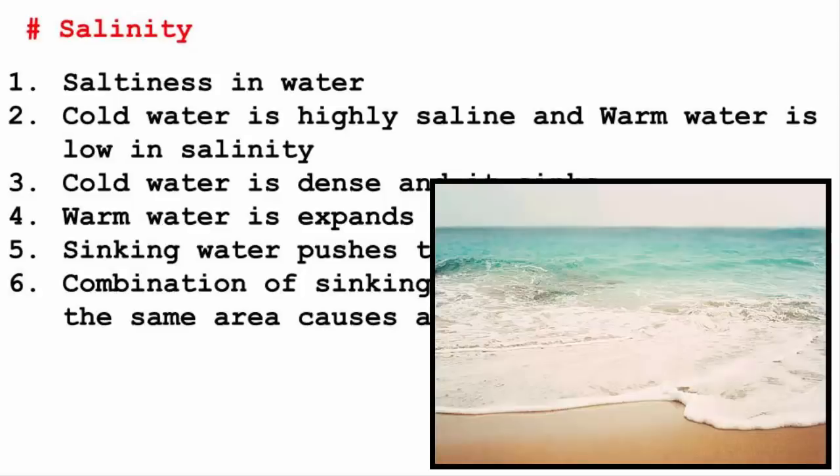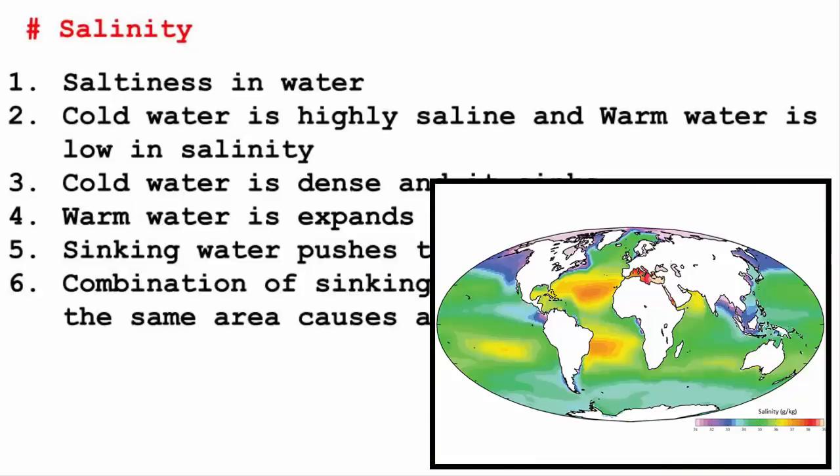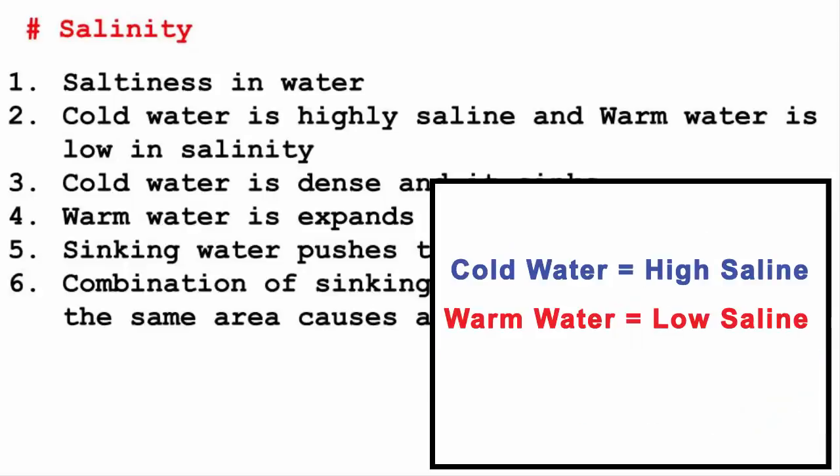The second factor is salinity. Salinity means the amount of salt present in water, and ocean water is generally saline in nature. Always remember this point: cold water is highly saline and warm water is comparatively lower in salinity.